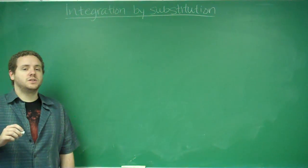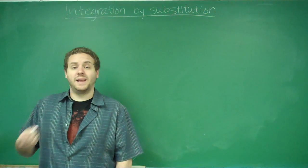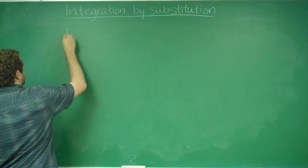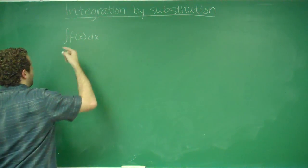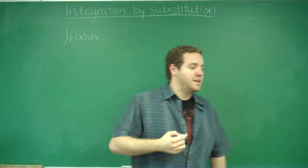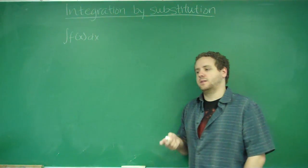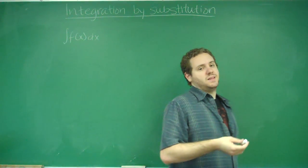In integration by substitution, it's kind of like the chain rule for antiderivatives. The main strategy here is if you're doing the antiderivative of f of x, and f of x is a function that you can't use power rule on, you can't effectively separate it, separating fractions and trying to do it term by term, or anything like that.